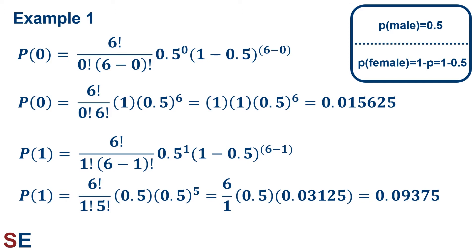We can also look at the probability of observing one male frog in our set of 6. The probability equals 6 factorial divided by 1 factorial times 6 minus 1 factorial, all multiplied by 0.5 to the 1st power times 1 minus 0.5 raised to the 6 minus 1 power. The 6 factorial over 5 factorial reduces to just 6. This 6 is multiplied by 0.5 times 0.03125 to give us 0.09375 for our final probability of seeing one male frog.